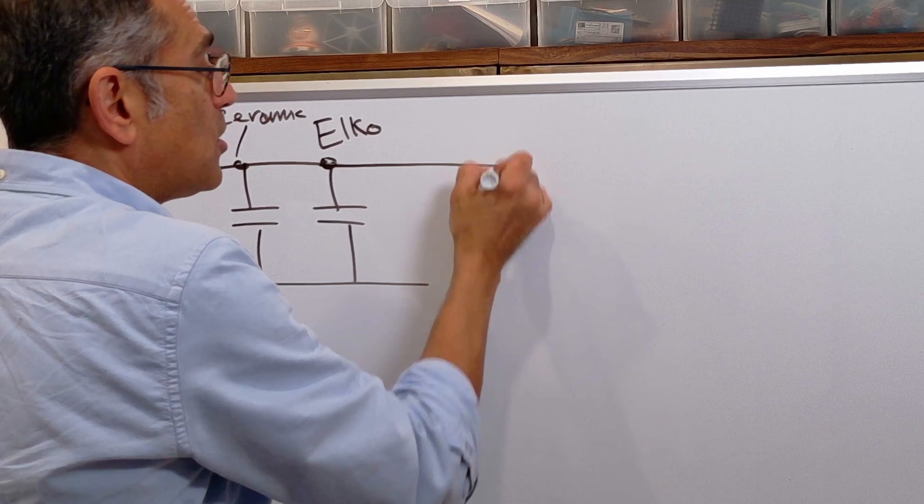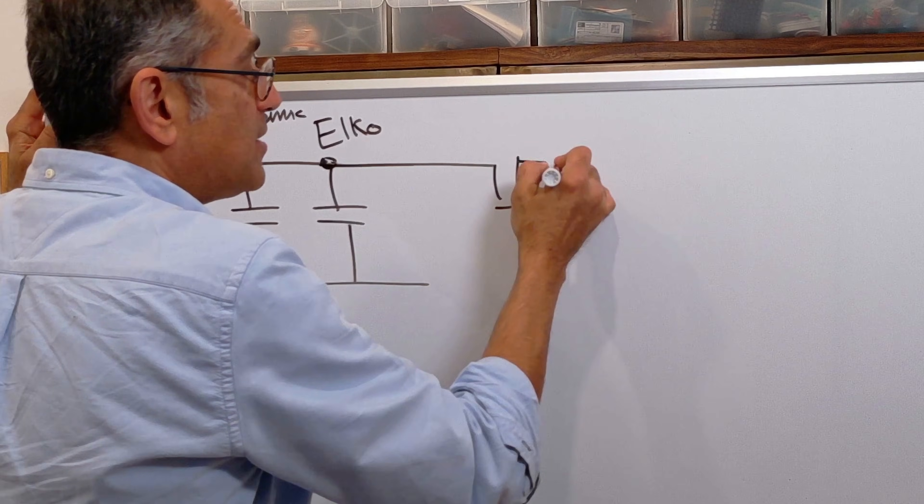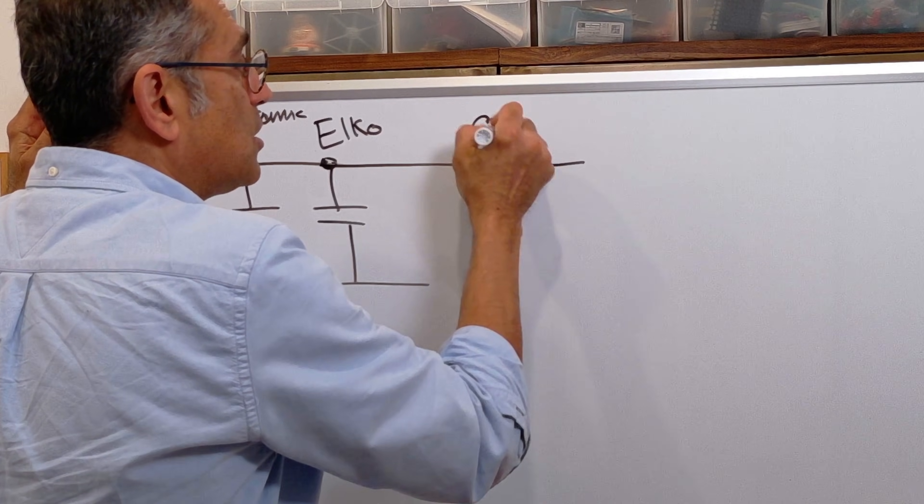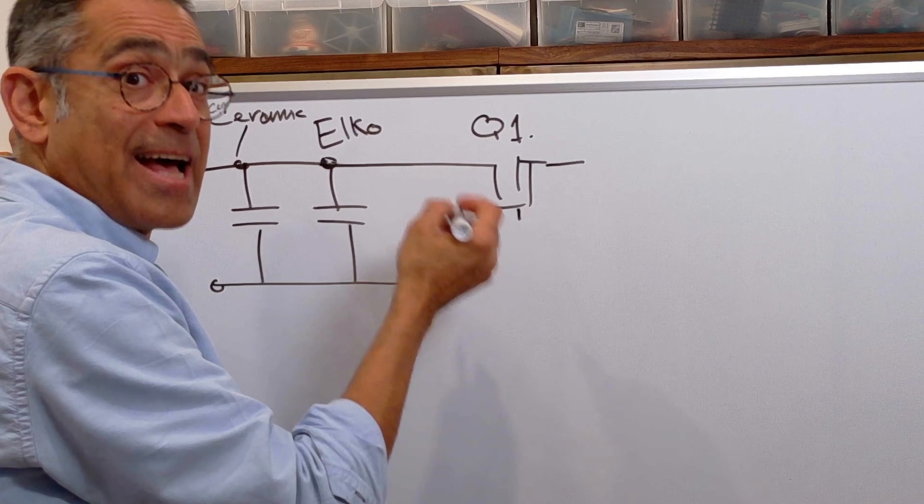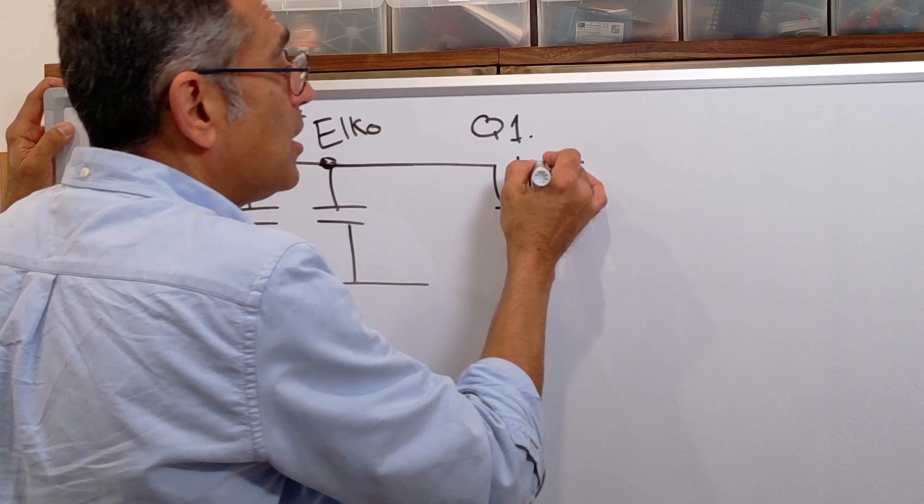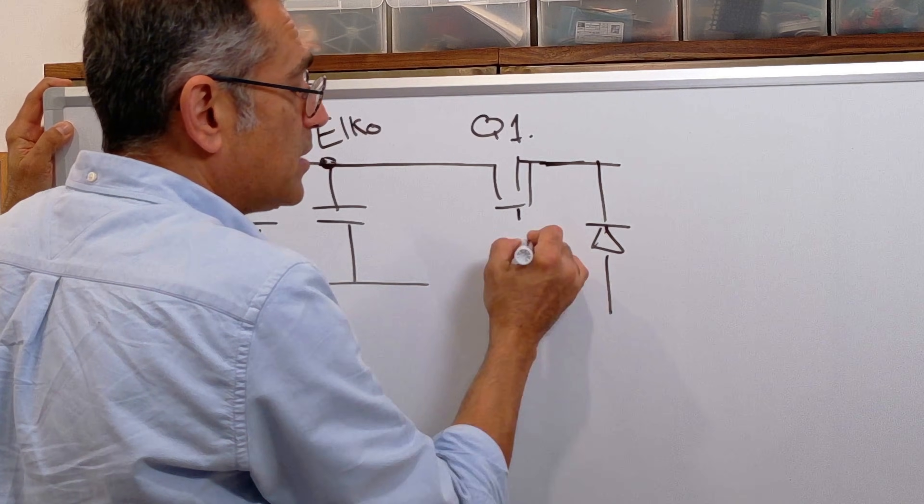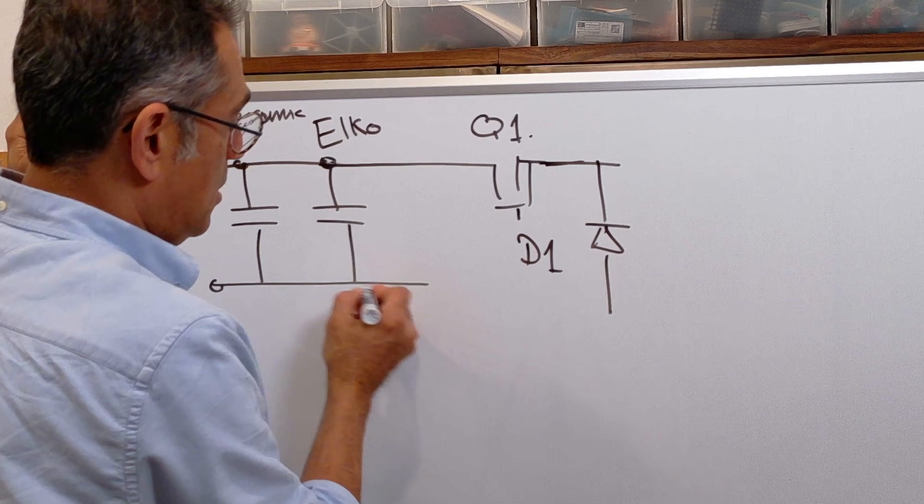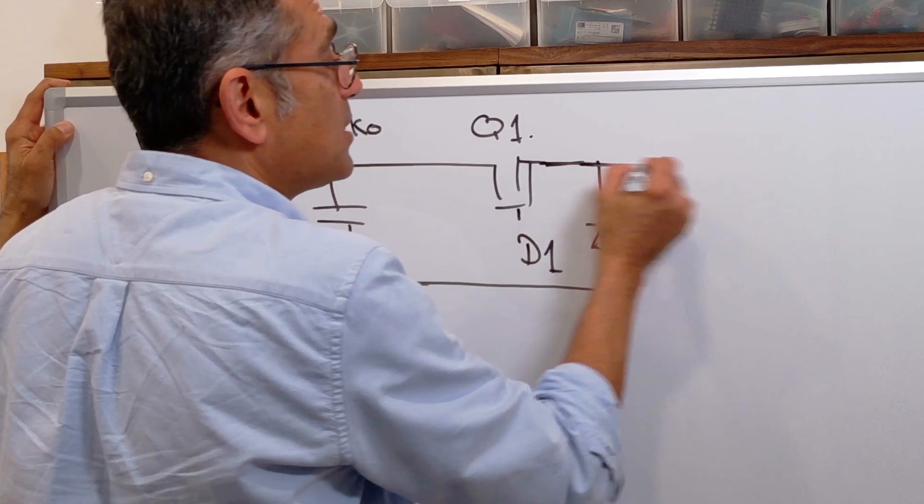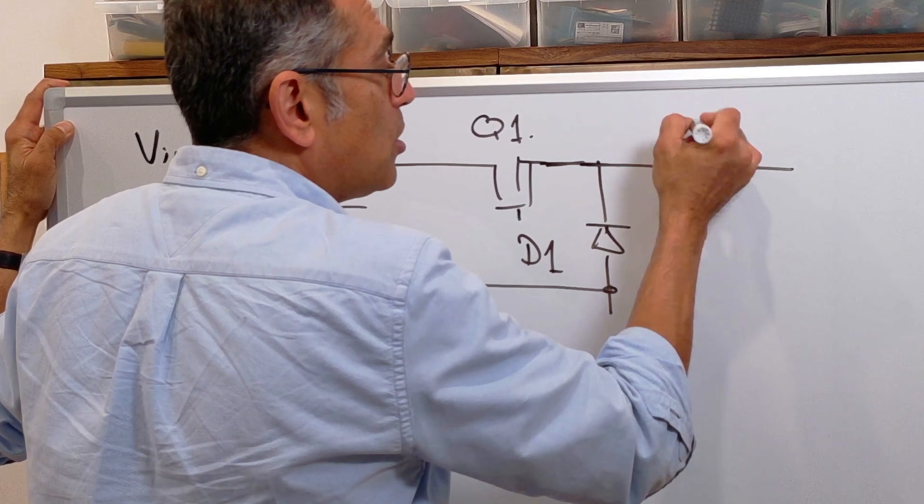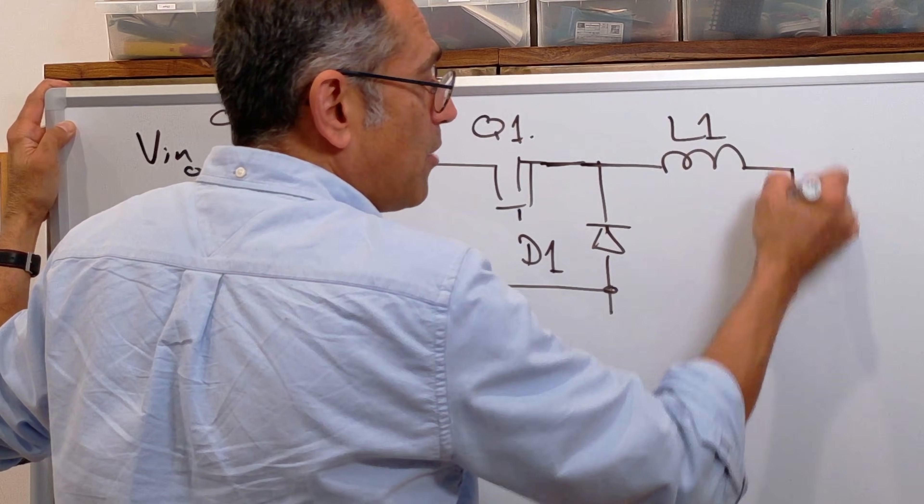And then that goes into a FET. Let's call this Q1. Again, we will discuss in detail exactly how you select the switch. You must have a freewheeling diode. Let's call that D1. Again, we will learn how to choose this. Same with the choke L1 or output power inductor.